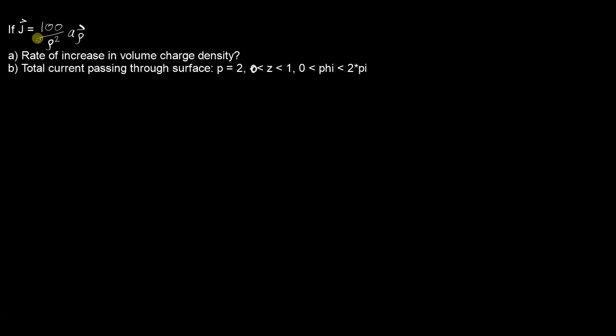Okay, so for this question you're given current density J is equal to 100 over rho squared in the rho direction and they ask you to find the rate of increase in volume charge density. So you can interpret that to mean what is the change in rho_v with respect to time.